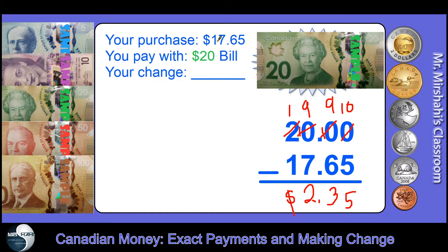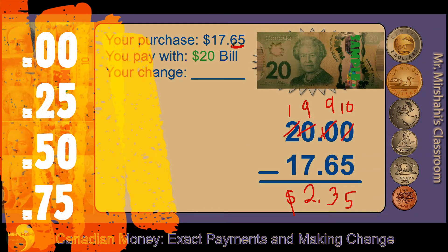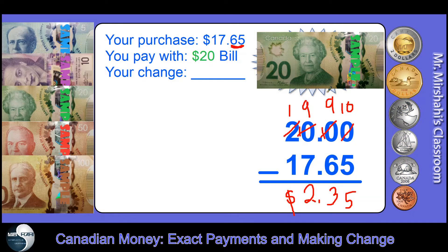Let's see how much faster and more efficient it is to do it by counting up from $17.65 to $20. The way you do it is you want to make sure you get to the next multiple of 25. Remember: 0, 25, 50, 75 — if you count by 25, those are multiples of 25. So we want to go to 75, that's the next 25.